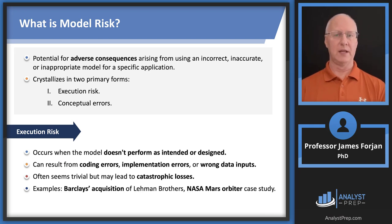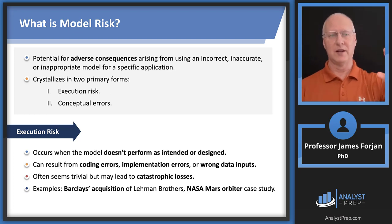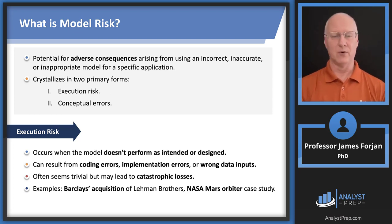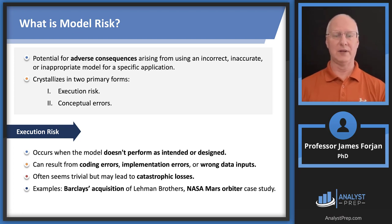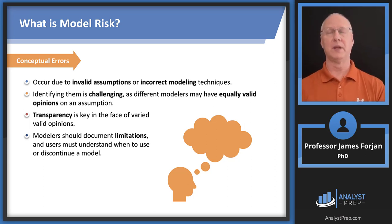Model risk is defined in this chapter as the adverse consequences that result from all sorts of bad things that can happen inside of a model, and we see this in two forms: execution risk and conceptual errors. We're going to look at two examples — Barclays and the Mars spacecraft. Execution risk means the model doesn't perform as intended or designed: coding errors, implementation errors, incorrect data inputs. The chapter emphasizes that these input errors can seem trivial but may lead to catastrophic losses, which of course happened with NASA.